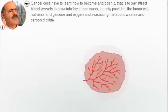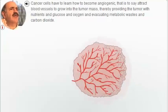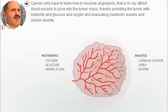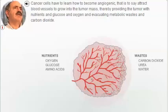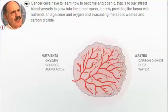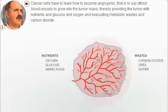Cancer cells have to learn how to become angiogenic — that is to say, attract blood vessels to grow into the tumor mass, thereby providing the tumor with nutrients, glucose, and oxygen, and evacuating metabolic wastes and carbon dioxide.